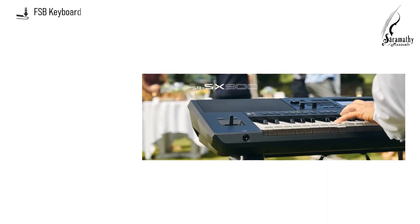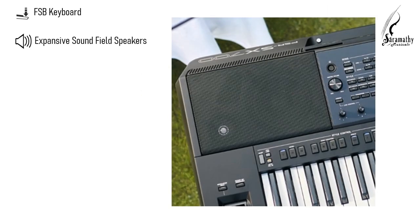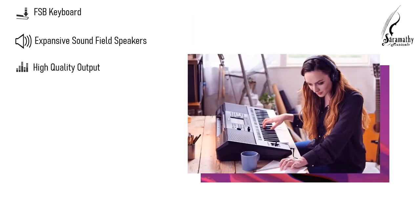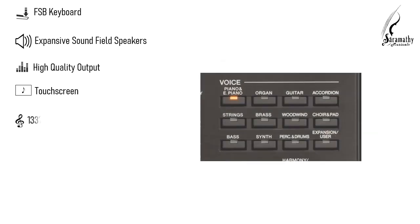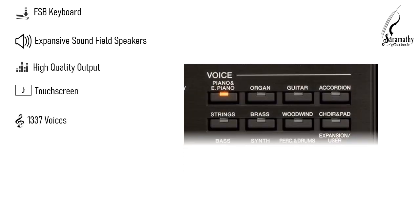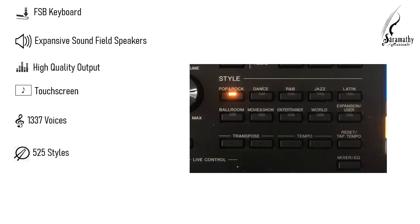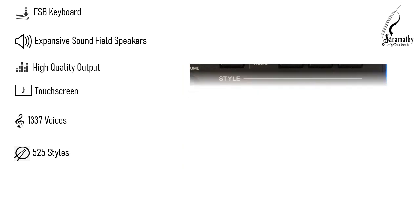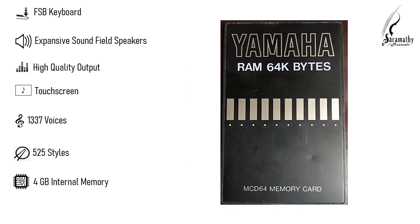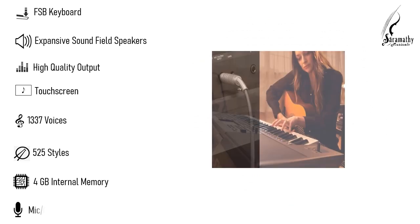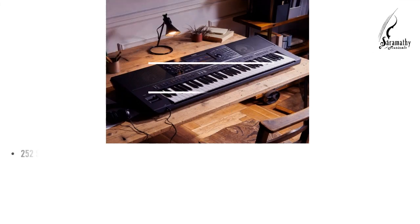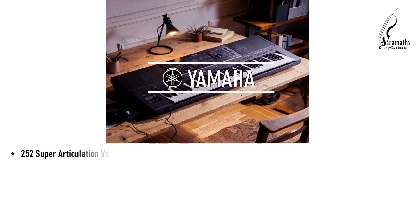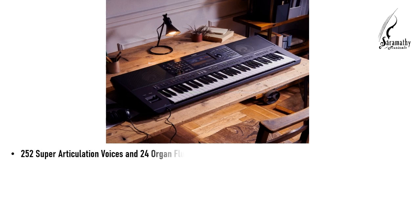The SX-900 features an FSB Keyboard, Expansive Sound Field Speakers, high-quality output, and a touchscreen. It includes 1,337 voices, 525 styles, 4GB internal memory, and supports mic and guitar imports. Among the voices are 252 Super Articulation Voices and 24 Organ Flutes.